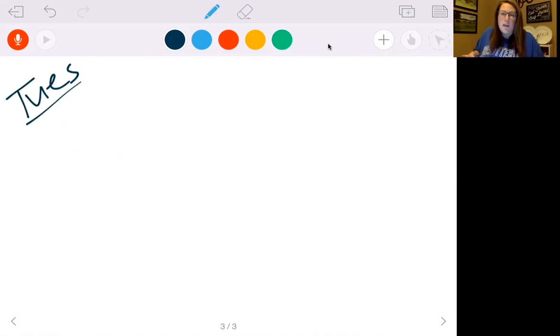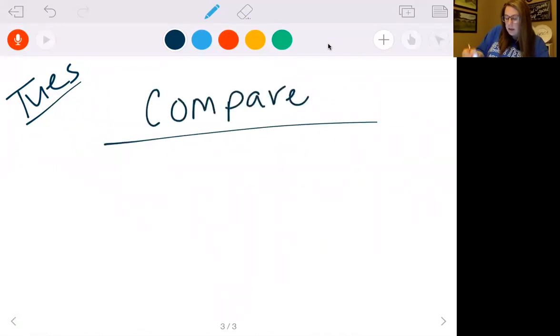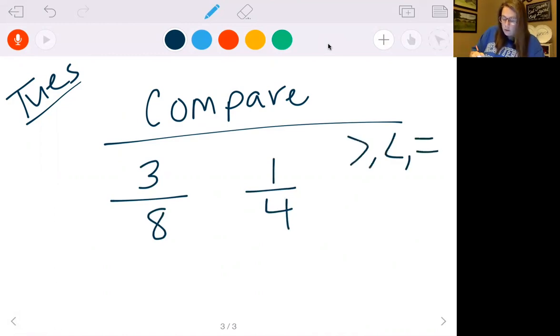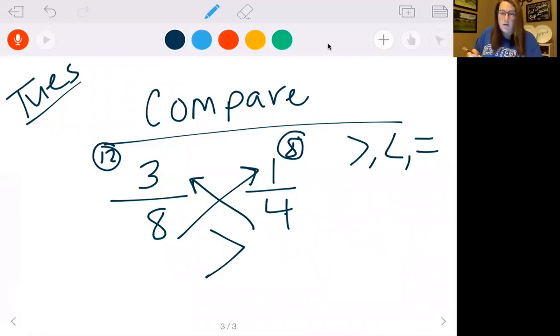First I want to show you something that we did last week in class that I did not include on the video. When you're talking about comparing fractions, this is a quick and easy way to do it. If you have something like three eighths and one fourth, and we want to see if it's greater than, less than, or equal to, we can do something called cross multiplying. So we can do four times three and we get twelve. Eight times one is eight. So since twelve is bigger than eight, three eighths is greater than one fourth. This is just a little trick and it makes it so much easier.